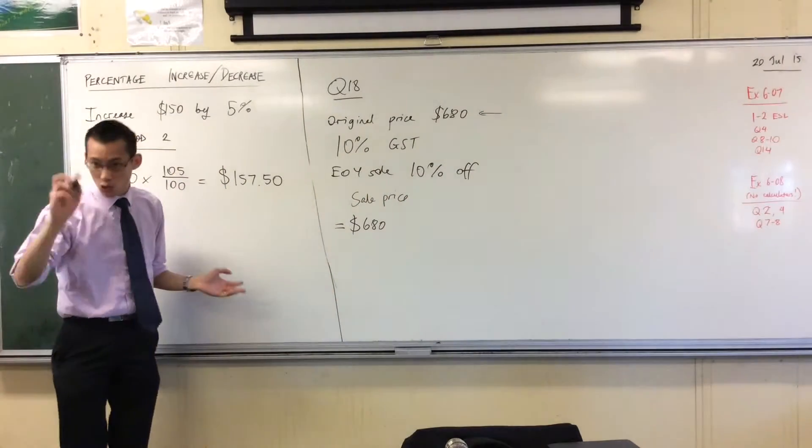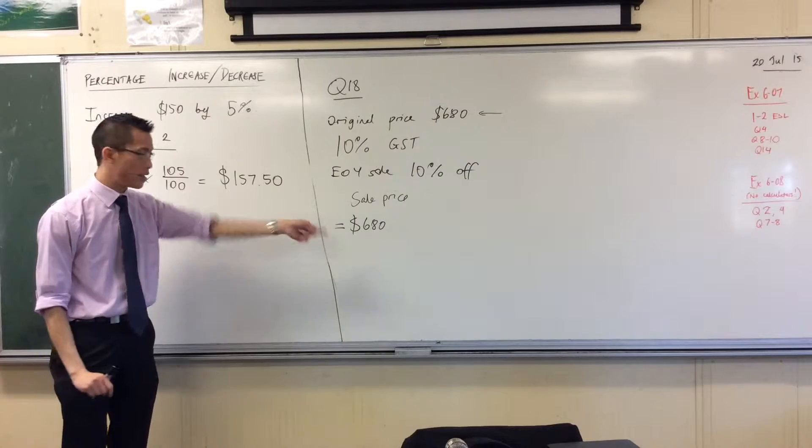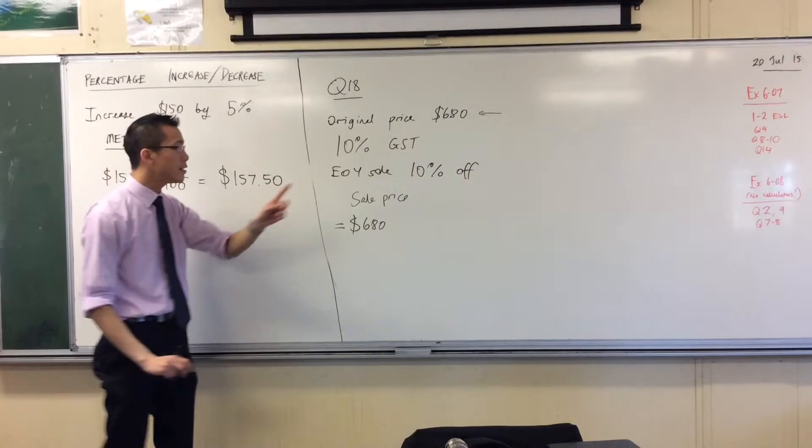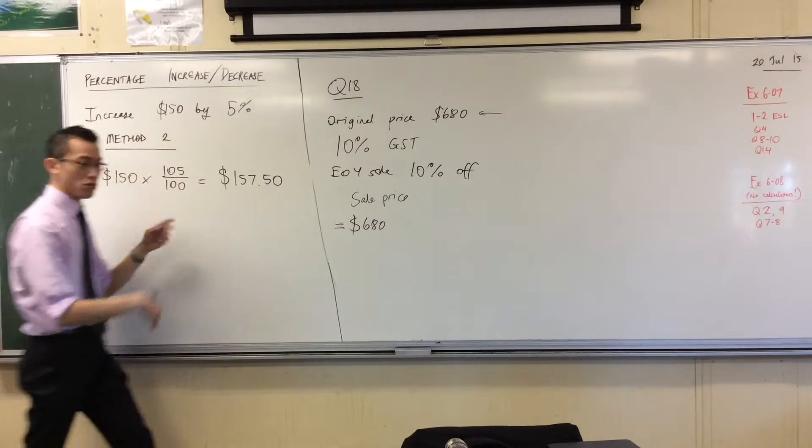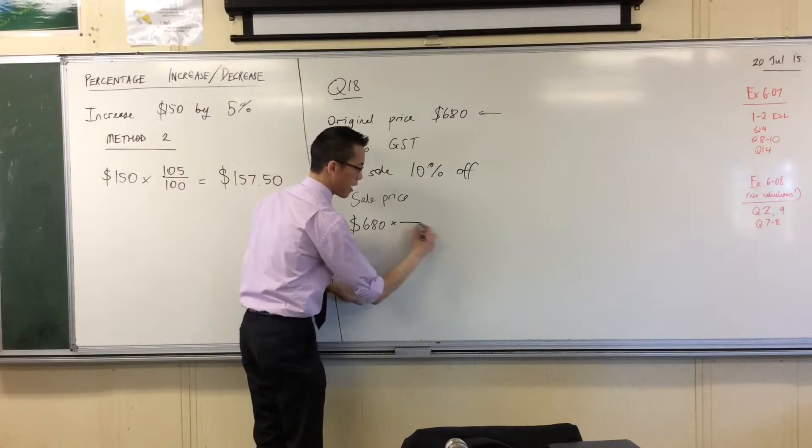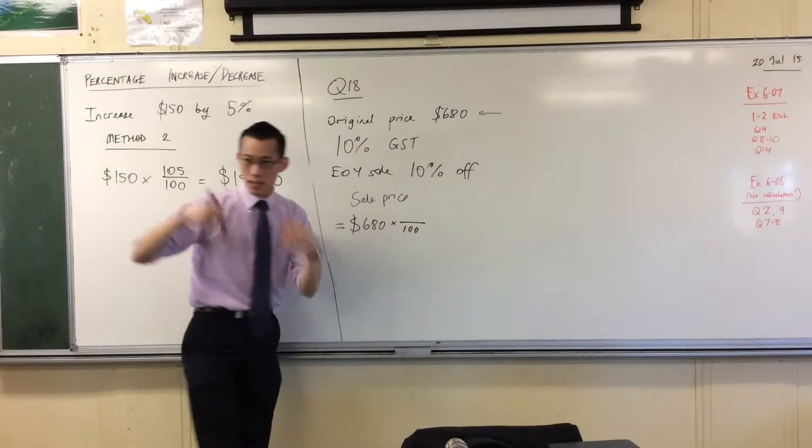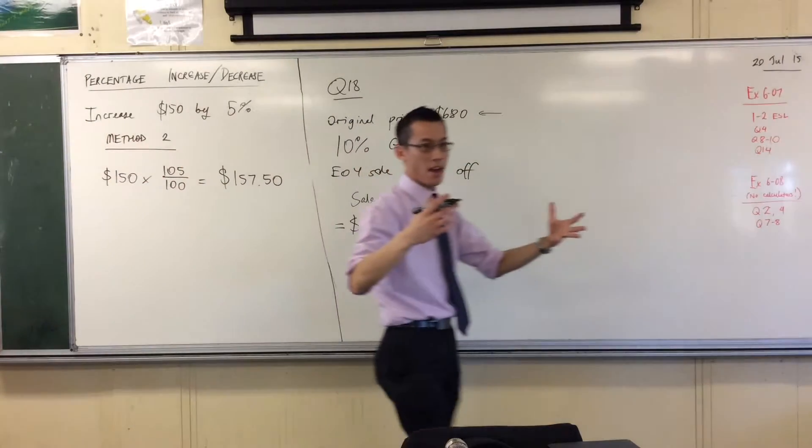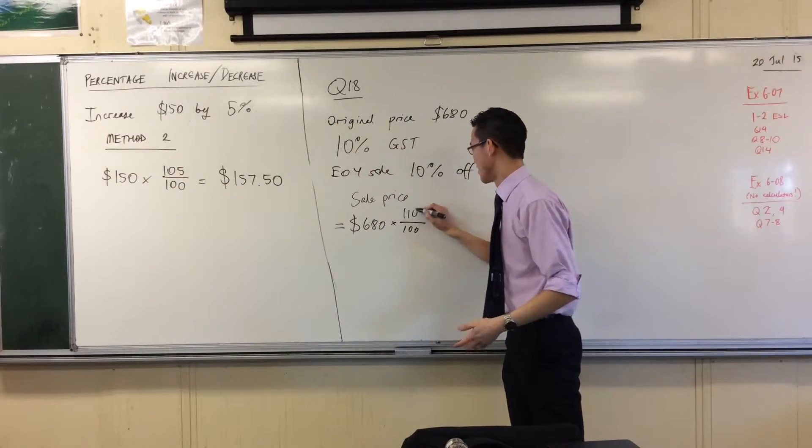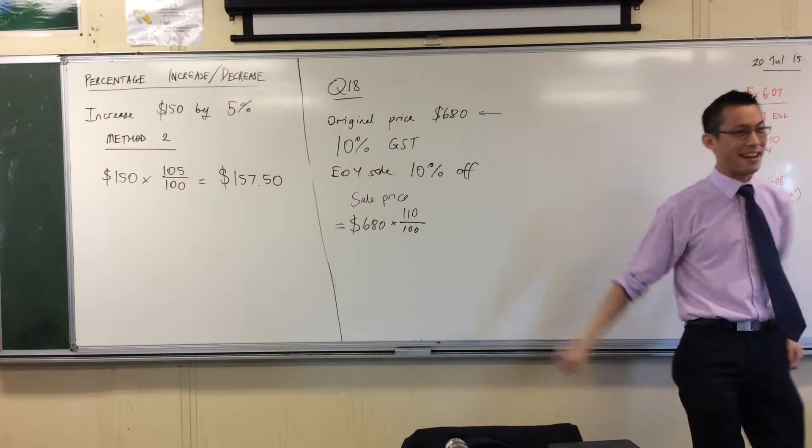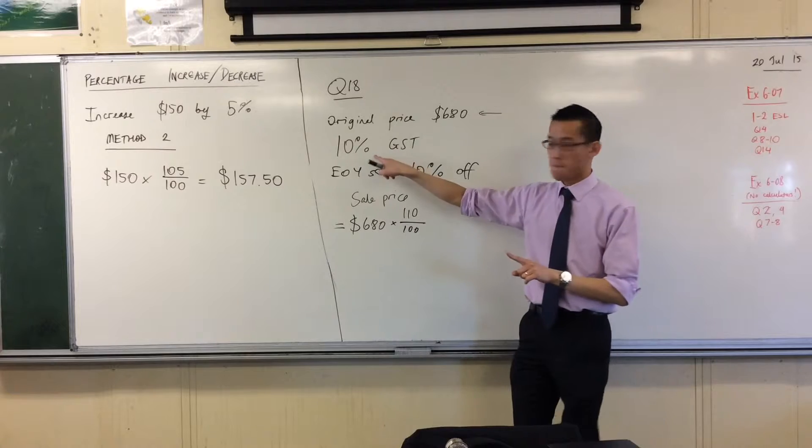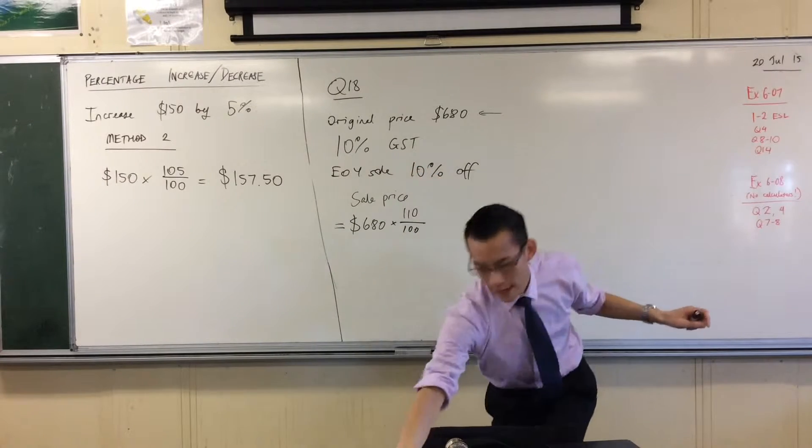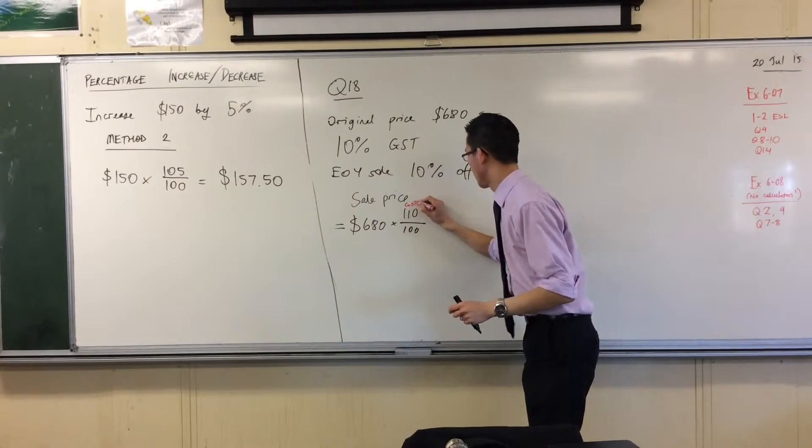Now what happens is two things happen to this original price. Number one, it increases, right? That was this kind of question over here. So to increase, I multiply by something over 100, and it's increased, so it's bigger than 100. It'll be 110, right? You know, it's like how'd you go? I put it 110%. That's 110%. So there's the first thing, there's the GST. In fact, I'm even going to write that, GST.